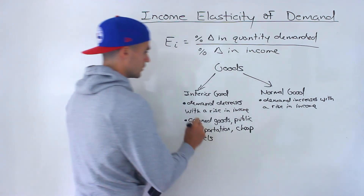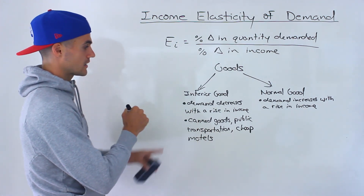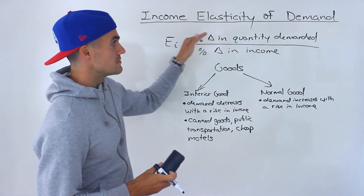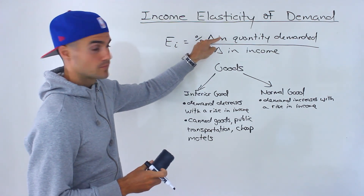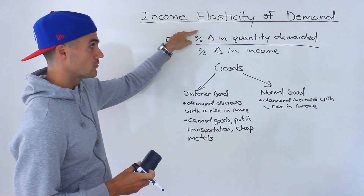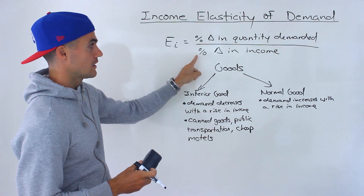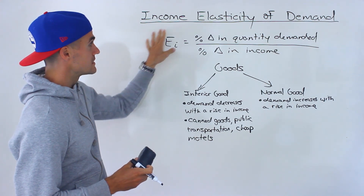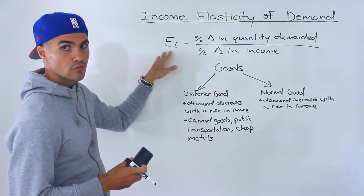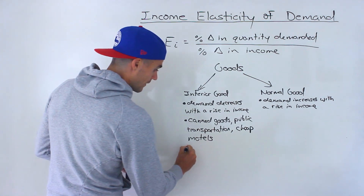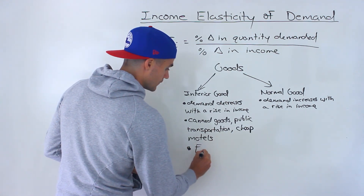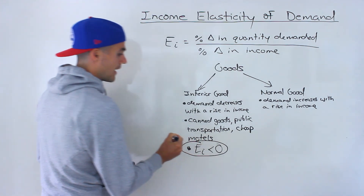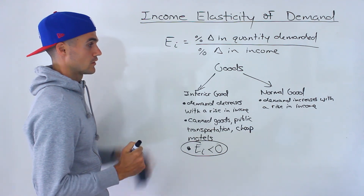For inferior goods, demand decreases with a rise in income. Notice that the quantity demanded of an inferior good is going to go down, so the numerator is going to be negative with a rise in income and the denominator is going to be positive. Negative over positive makes the income elasticity of demand coefficient negative. When that coefficient is negative — less than zero — the type of good you're dealing with is an inferior good.